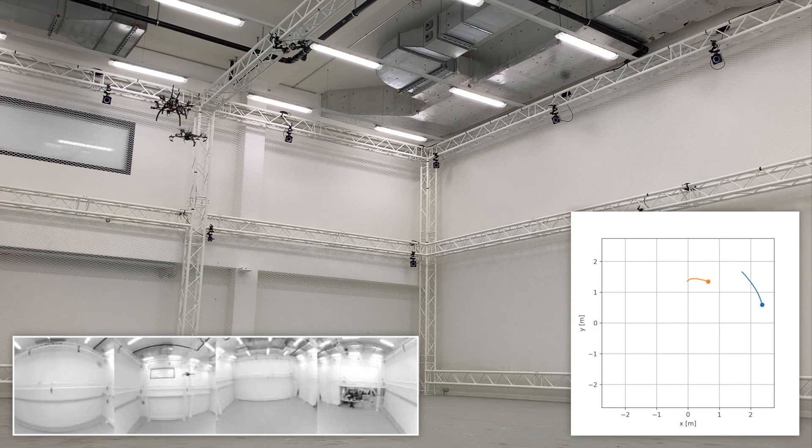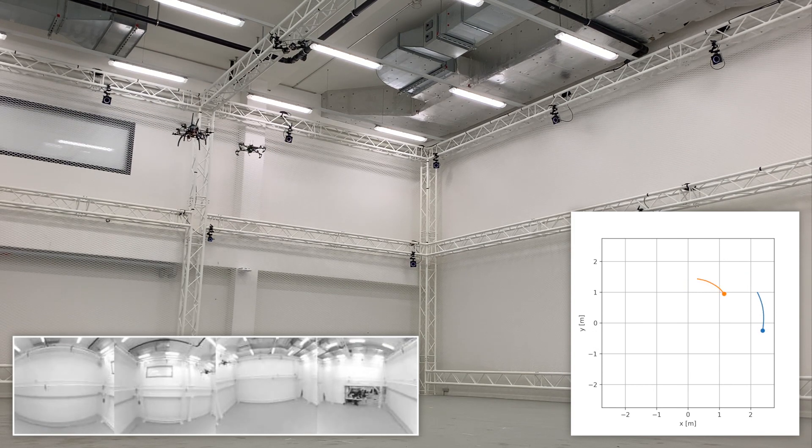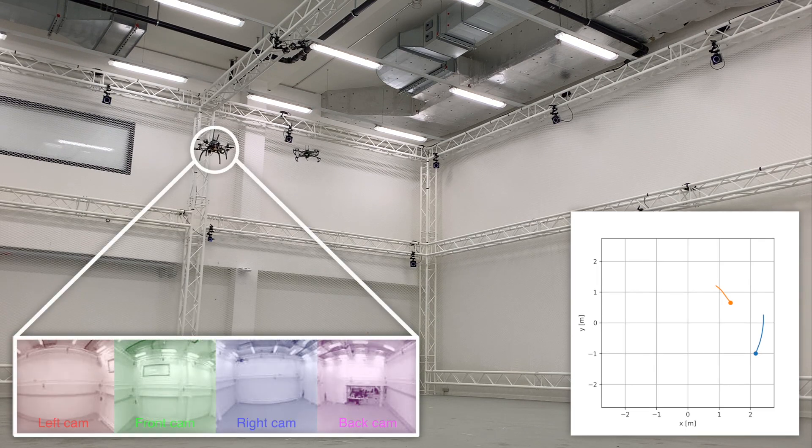Similar to the setup in simulation, the follower drone acquires omnidirectional visual inputs and uses the raw 3D velocity command predicted by the neural network for control.